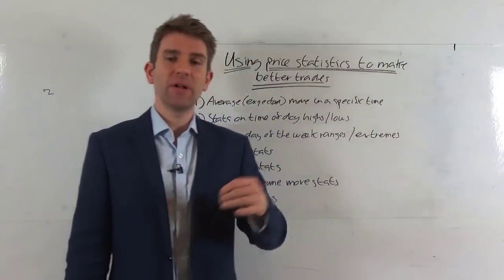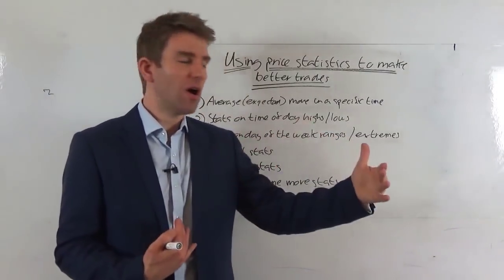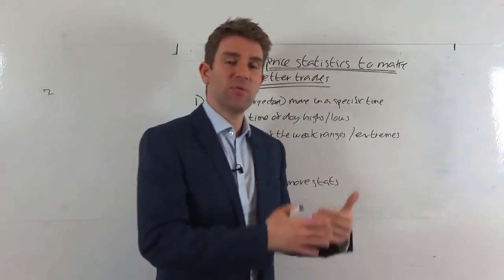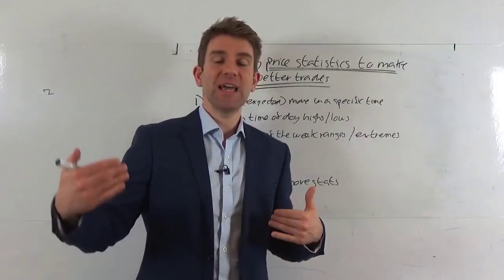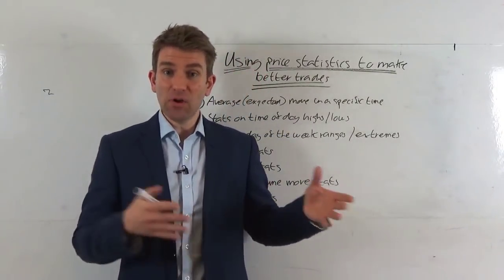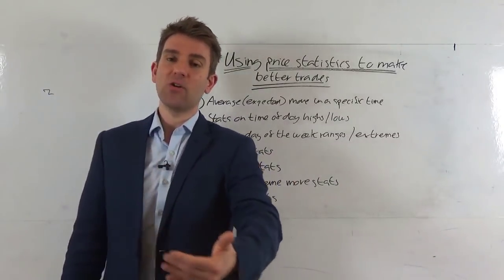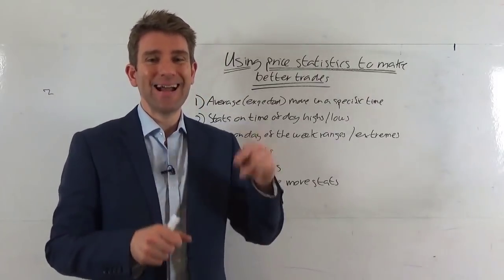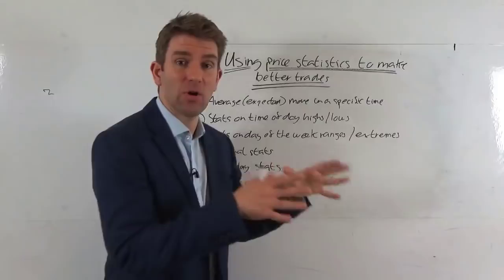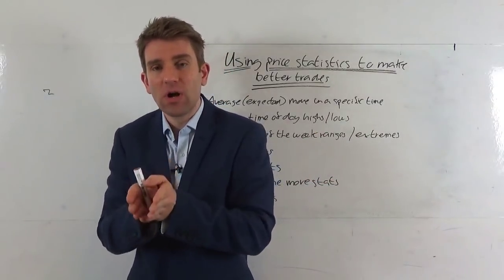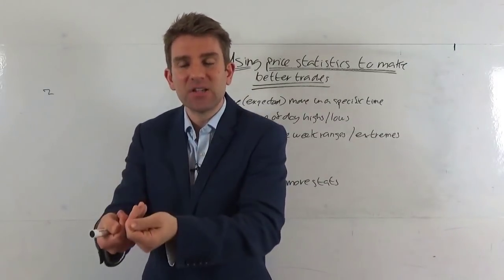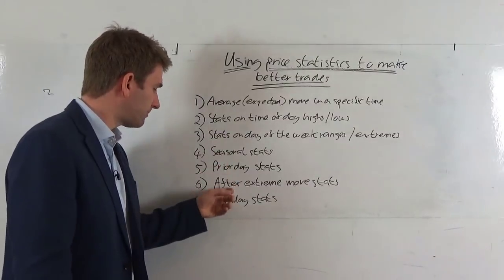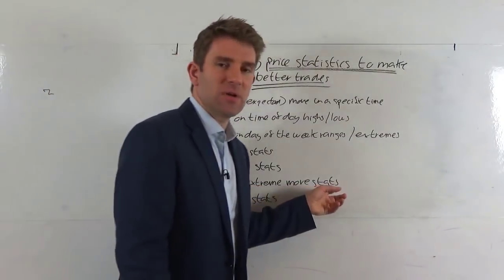Number five: prior day stats. For example, if yesterday was a really strong trend day that closed on highs, the stats might say we normally take out the prior day's highs and then chop around at lunchtime. With that information, you might not want to take the breakout trade — instead take a dip trade for a push to highs, then close in advance of the chop. The key is to use stats as a starting point to filter your position and what you're looking for, then still add your strategy, setup, and chart pattern into it.